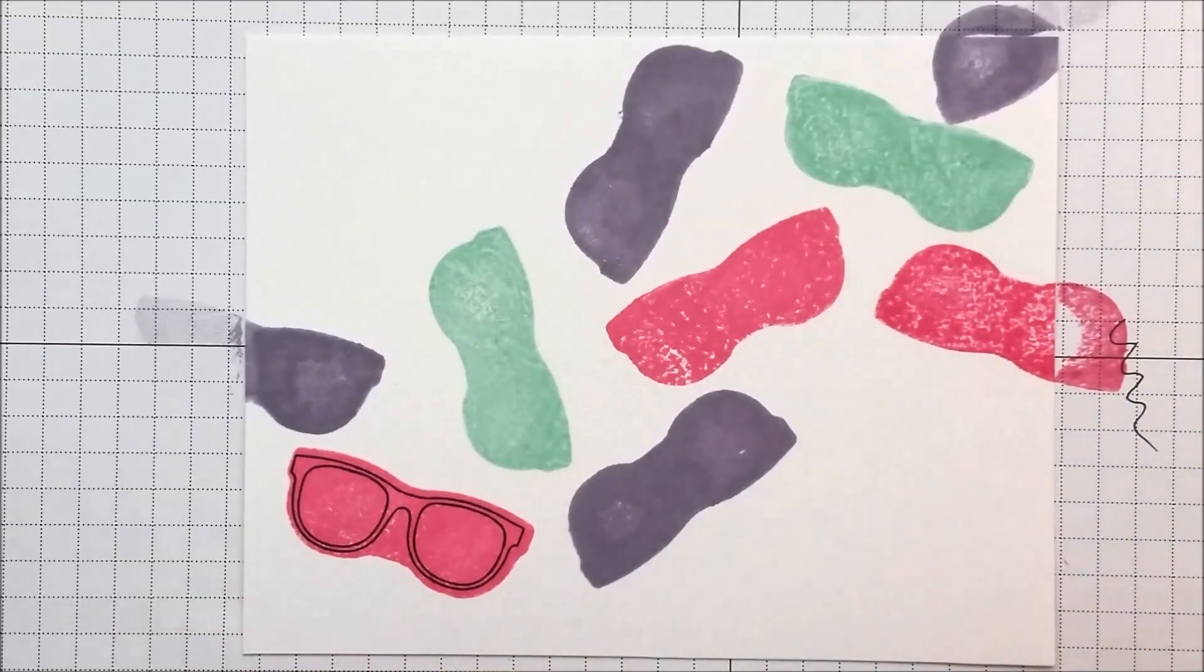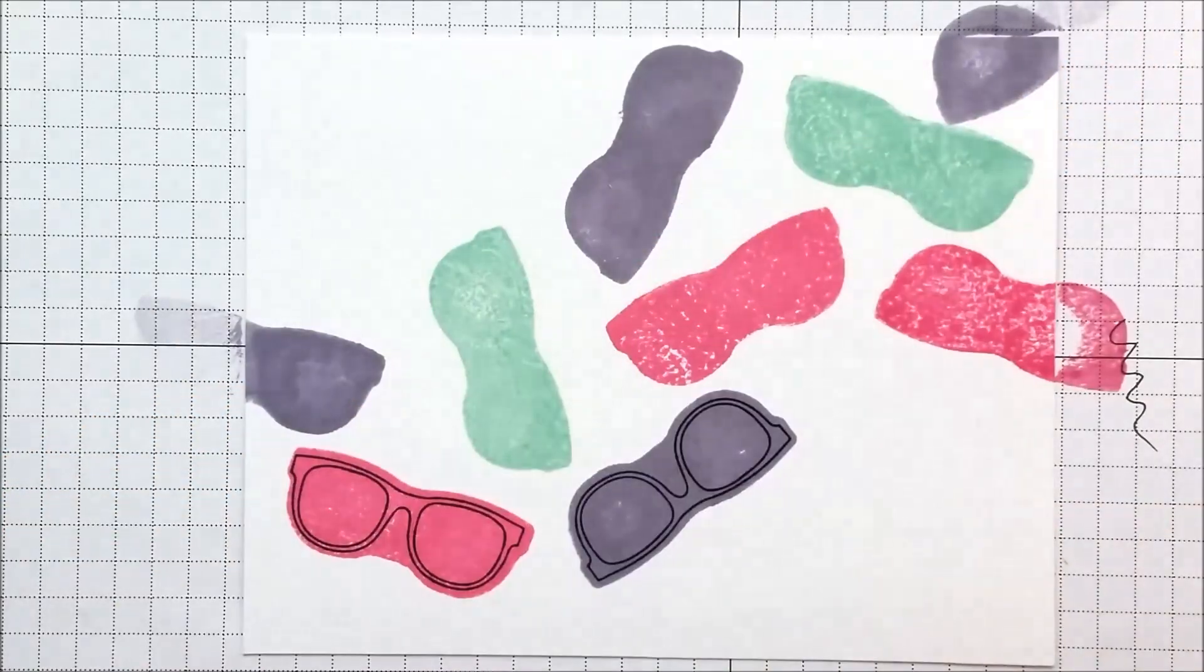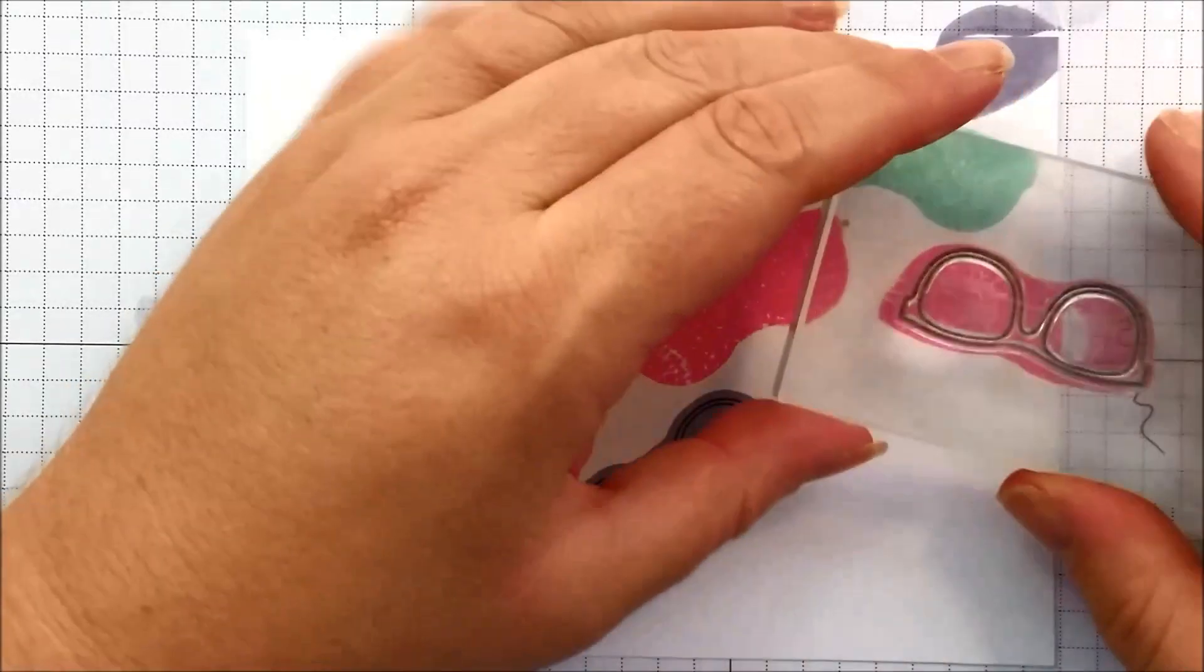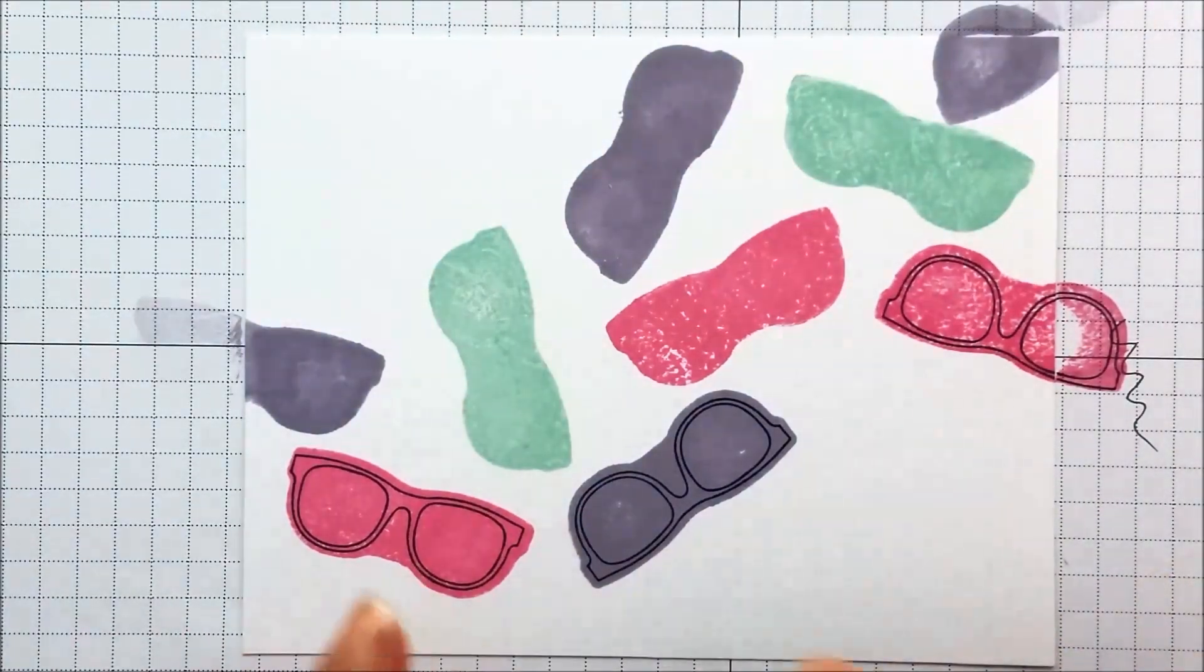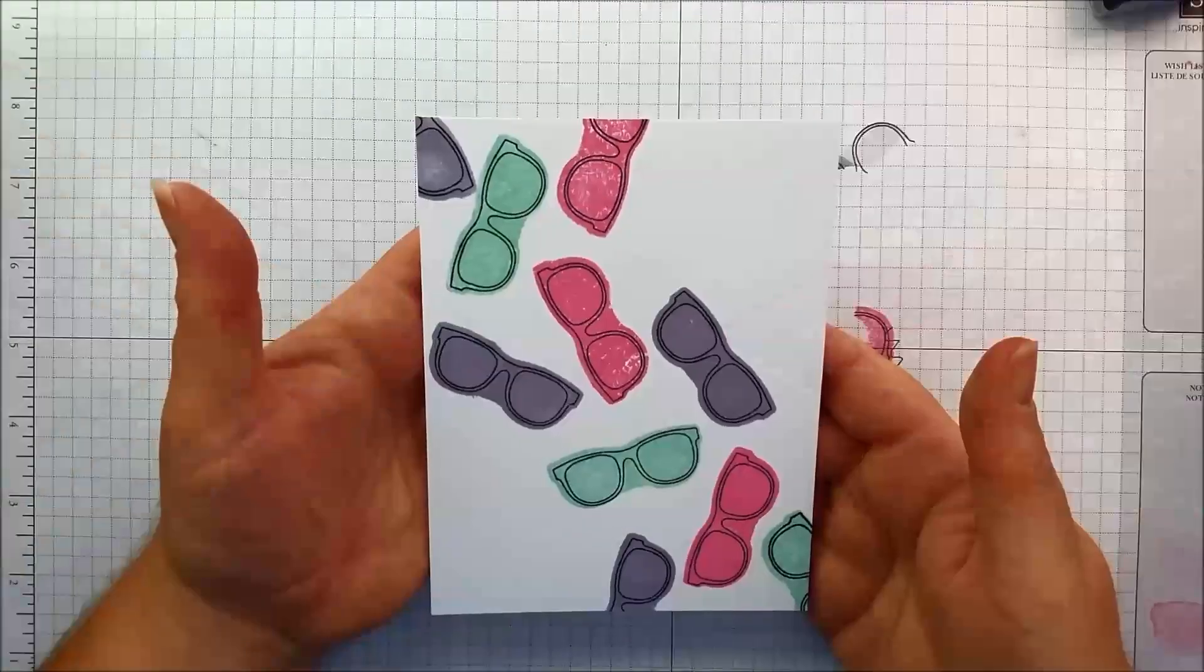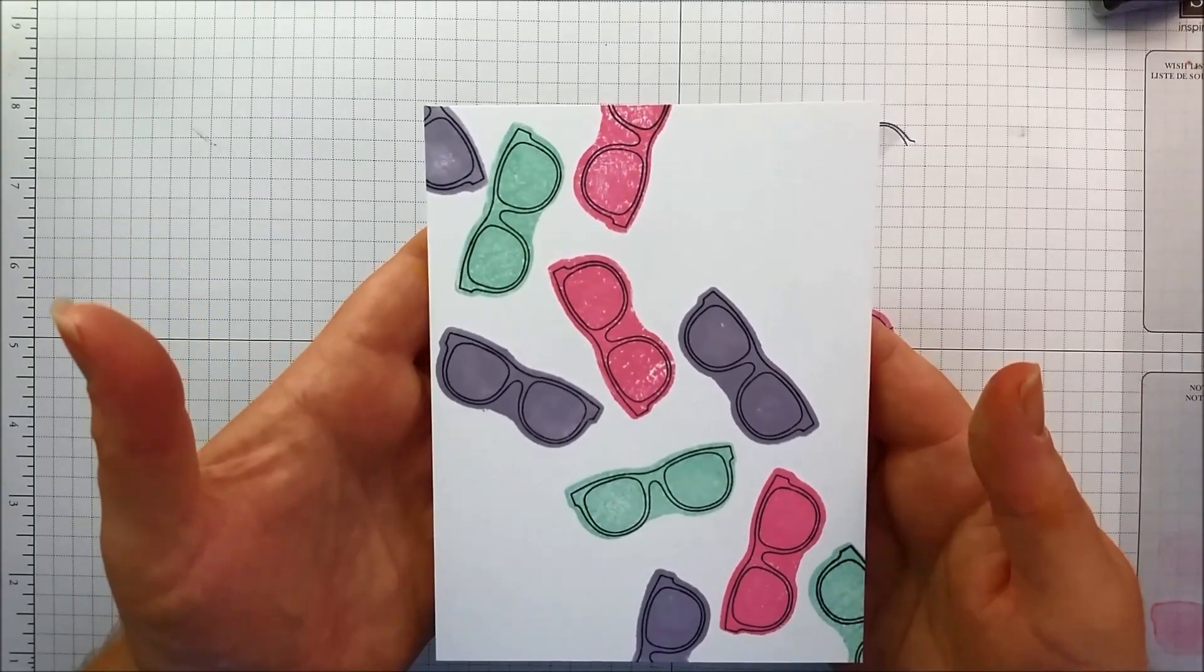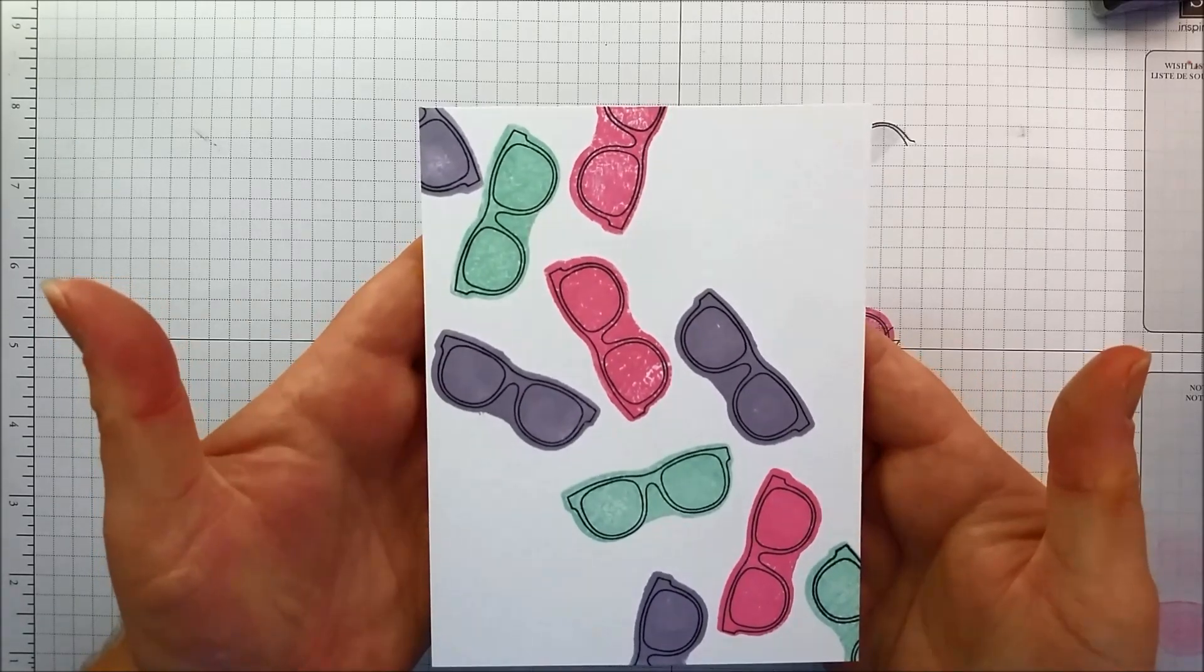So I've reversed the stamp and it's now sitting the way it would typically sit. I'm going to bring my Memento Black Tuxedo ink and ink up my little glasses image. We're going to use those pink, green and purple spaces to be our guide to line up our super cute little images. Your stamping doesn't have to be perfect - this is a homemade card. And there's our fun background made using both sides of your stamps.